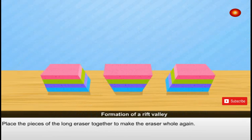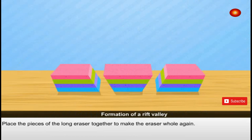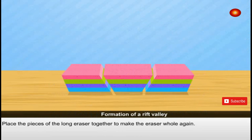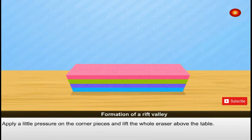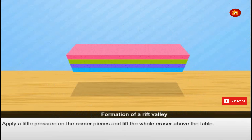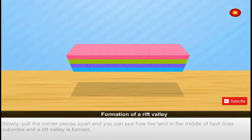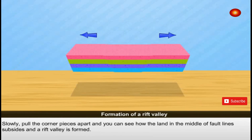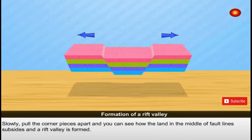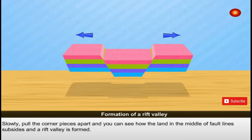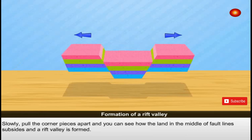Place the pieces of the long eraser together to make the eraser whole again. Apply a little pressure on the corner pieces and lift the whole eraser above the table. Slowly pull the corner pieces apart and you can see how the land in the middle of the fault line subsides and a rift valley is formed.